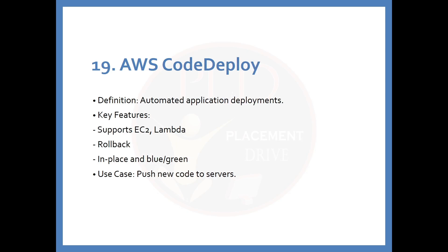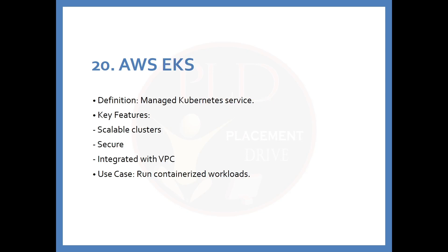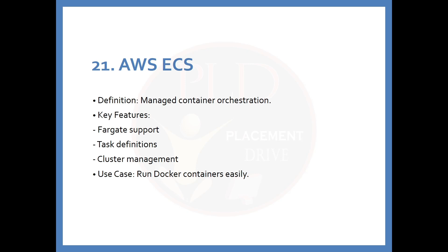The 19th service is AWS CodeDeploy. The definition is: automated application deployment. Key features include support for EC2 and Lambda, rollback capability, and in-place and blue/green deployments. The use case is pushing new code to servers. The 20th service is AWS EKS. The definition is: a managed Kubernetes service. Key features include scalable clusters, security, and VPC integration. The use case is running containerized workloads.